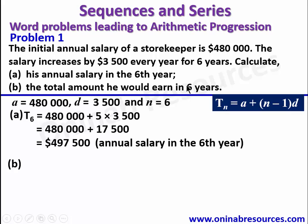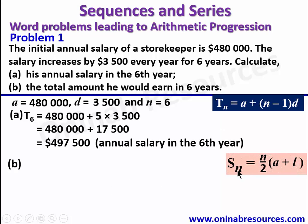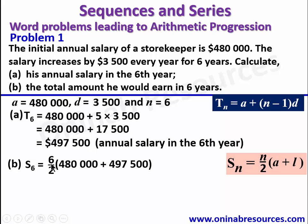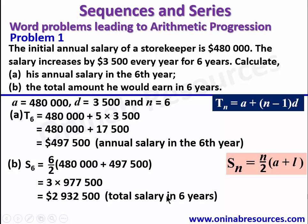Now we go for the total amount he will earn in 6 years — that is the sum of all his salaries from the first year up to the 6th year. We will use our formula for the sum of N terms: SN = N/2 × (A + L). Here N = 6, A = 480,000, and L = T6 = 497,500. So S6 = 6/2 × (480,000 + 497,500) = 3 × 977,500. Multiplying out, we have $2,932,500, which is the total salary in 6 years.